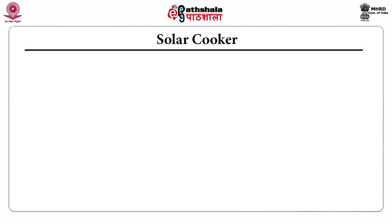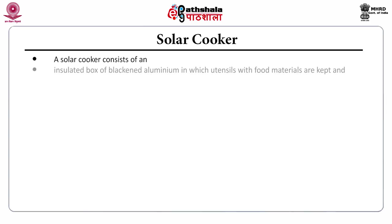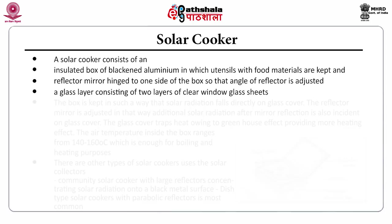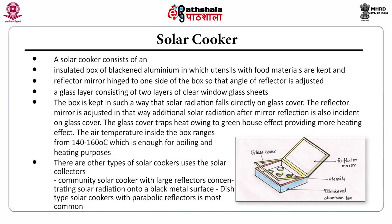Solar cooker: it consists of an insulated box of blackened aluminium in which utensils with food materials are kept, and a reflector mirror hinged to one side of the box. The angle of the reflector is adjustable. A glass layer consisting of two clear window glass sheets covers the box, which is positioned so solar radiation falls directly on the glass cover. Additional solar radiation is reflected by the mirror onto the glass cover. The glass cover traps heat due to the greenhouse effect, raising the air temperature inside the box to 140–160°C, which is sufficient for boiling and heating.